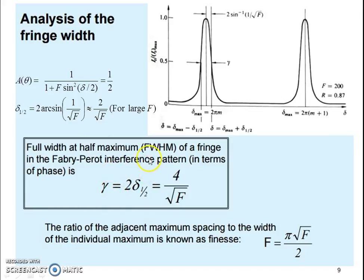We can estimate the FWHM of the interference maxima patterns or peaks in the form of 4 by root F. Finally, it defines the ratio of the adjacent maxima spacing to the width of the individual maximum, known as the finesse of this interferogram, capital F, which is pi root over F by 2.